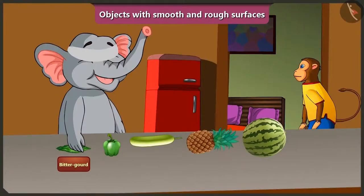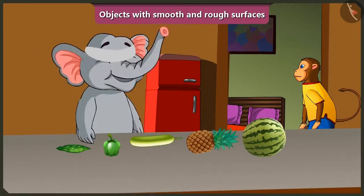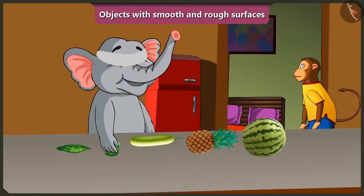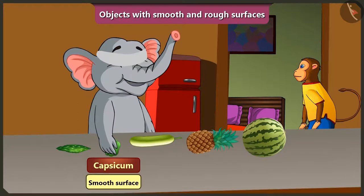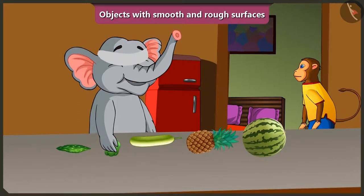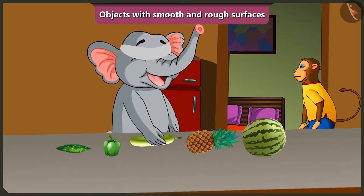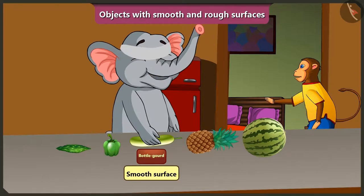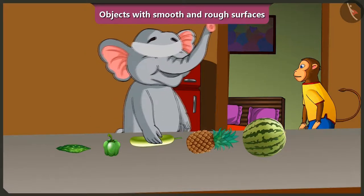This is bitter gourd. It has a rough surface. This is capsicum. It has a smooth surface. And this is a bottle gourd. This too has a smooth surface. Absolutely right Appu. Come on, now try and feel these fruits.